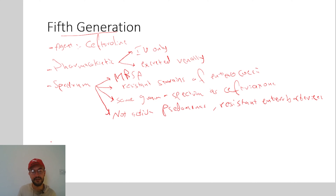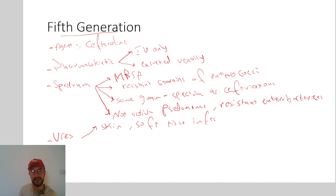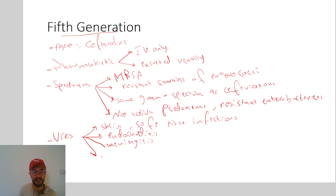Regarding the therapeutic uses of the fifth generation, they are used for skin and soft tissue infections caused by MRSA. They are also used for endocarditis, meningitis, and osteomyelitis caused by resistant bacteria, especially MRSA.